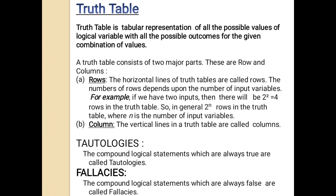Before discussing the logical operators, let's know about truth tables. A truth table is a tabular representation of all the possible values of logical variables with all the possible outcomes for the given combination of values. A truth table consists of two major parts. The first is rows — the horizontal lines of the truth table are called rows.